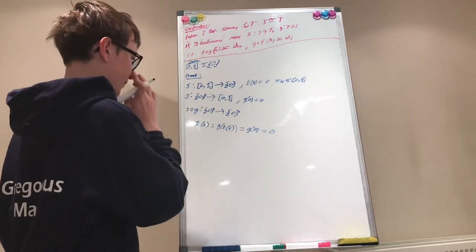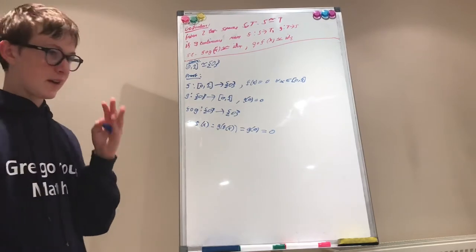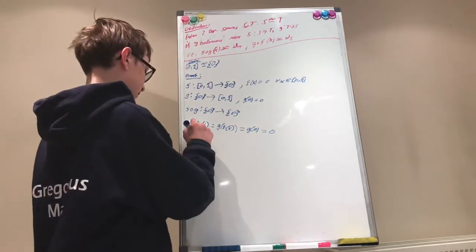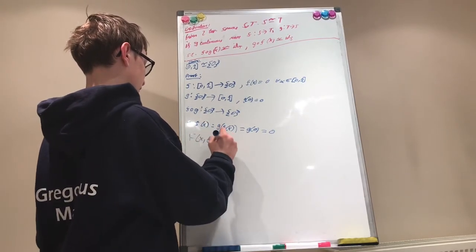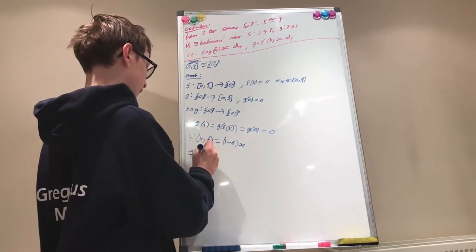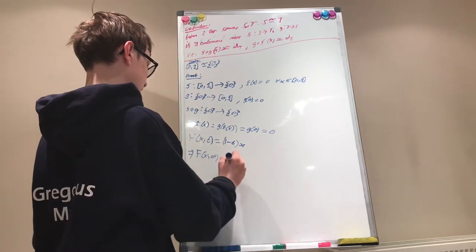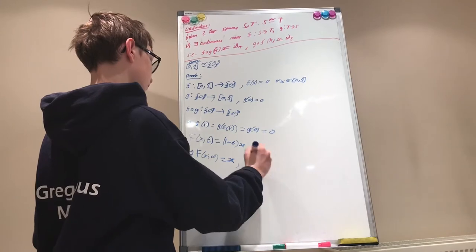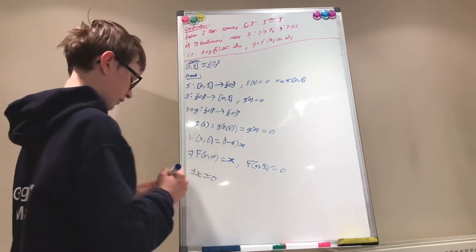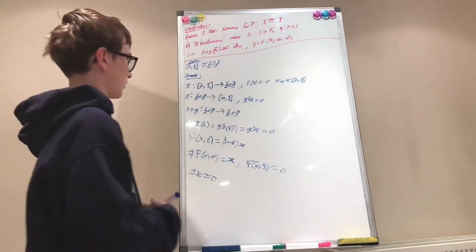And this function is homotopic to the identity from [0,1] to [0,1], via the homotopy F(x,t) = (1-t)·x. Why is this? Because that would imply F(x,0) = x, and F(x,1) = 0. Hence x is being homotoped to 0. Remember that the identity which goes from [0,1] to [0,1] is F(x) = x. So F(x) is homotopic to 0.